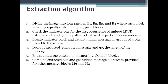The extraction algorithm: Divide the image into 4 parts B1, B2, B3, B4, each having equally distributed 3x3 pixel blocks. Check the indicator bits for the first occurrence of unique LRUD pattern blocks and get the patterns that are part of the hidden message. Locate indicator blocks and extract the hidden message in groups of 4 bits from the LRUD pattern. Decrypt the extracted encrypted message and get the length of the message. Extract the message based on indicator bits from all blocks. Combine extracted bits to get the hidden message bit stream for all message blocks M1 through M4.